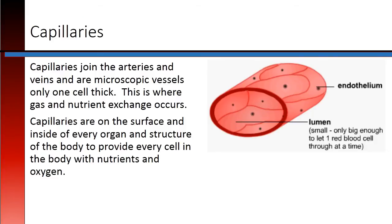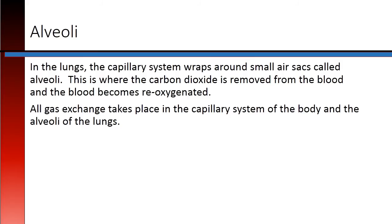Capillaries join the arteries and veins and are microscopic vessels only one cell thick. This is where gas and nutrient exchange occurs. Capillaries are on the surface and inside of every organ and structure of the body, to provide every cell with nutrients and oxygen. In the lungs, this capillary system wraps around small air sacs called alveoli. This is where carbon dioxide is removed from the blood and the blood becomes re-oxygenated. All gas exchange takes place in the capillary system of the body and in the alveoli of the lungs.